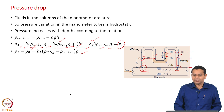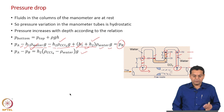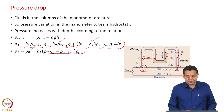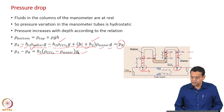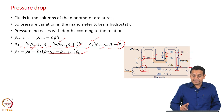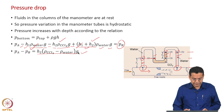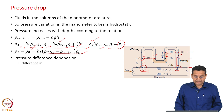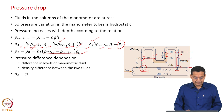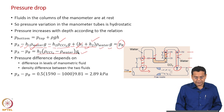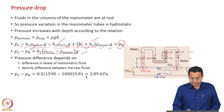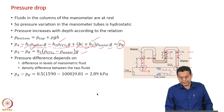Simplifying, p_A - p_B = h₂ × (ρ_CCl₄ - ρ_water) × g. Substituting h₂ = 0.5 m, ρ_CCl₄ = 1590 kg/m³, ρ_water = 1000 kg/m³, g = 9.81 m/s², the pressure drop p_A - p_B = 2.89 kPa. The pressure drop depends on the difference in manometric fluid levels and the density difference between the two fluids.